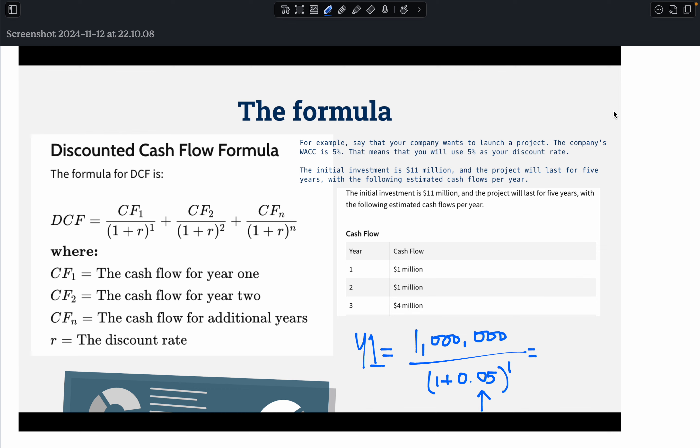Okay, so this is the discounted cash flow formula. You have this cash flow divided by 1 plus r to the power of 1 or to the power of n. Discounted cash flow takes into account the inflation or the discount rate.